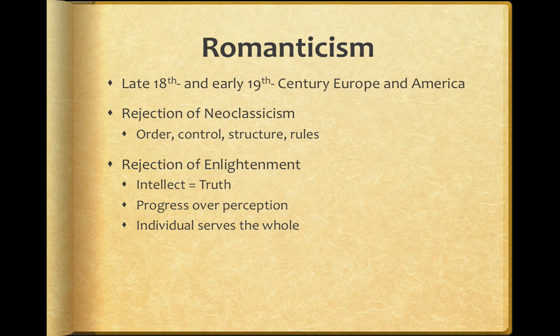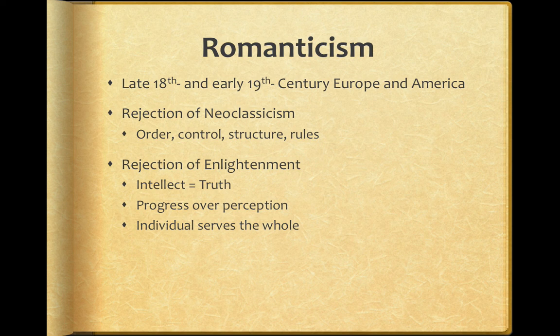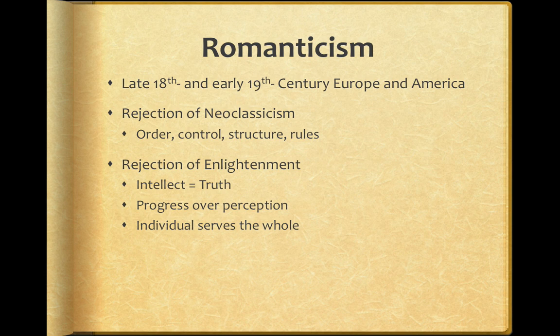The Age of Enlightenment people believed your job as an individual was to be really smart and accomplished and put that intelligence and accomplishment into service for the larger whole — the greater good. An example of the ideal Age of Enlightenment individual would be the scientist who makes an amazing discovery that benefits everyone, or a politician like Thomas Jefferson who writes the Declaration of Independence. The romantics, being very me-me-me people, said no — the individual should serve themselves first, understand and know yourself before doing any of that other stuff.